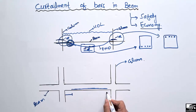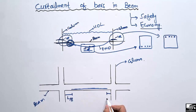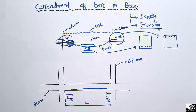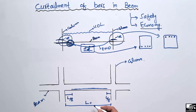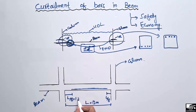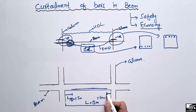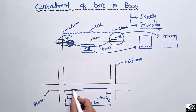How much should this cut-off distance be on both sides of the beam? This distance should be equal to L/8 on each side, where L is the total length of the beam. For example, if the total length of the beam is 12 meters, then L/8 equals 12 divided by 8, which comes out to 1.5 meters. So we cut the steel bar 1.5 meters from each end — 1.5 meters from one side and 1.5 meters from the other side.